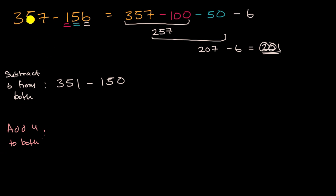Well, what's 357 plus four? 357 plus three gets us to 360, plus another one gets us to 361. And if I add four to 156, that is 160. And since I added four to both, I added the same amount to both, the difference is going to be the same. And so if you look through this, 300 minus 100 is 200. And then 61 minus 60, that gets us to 201.